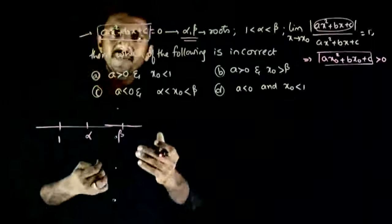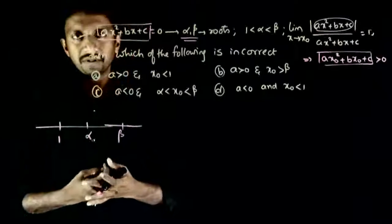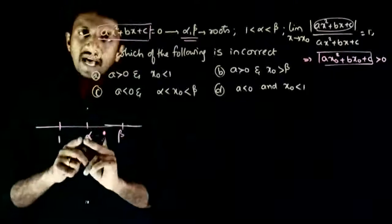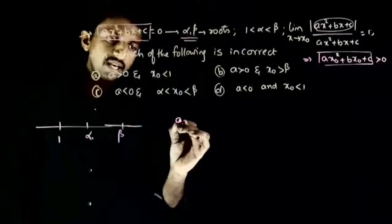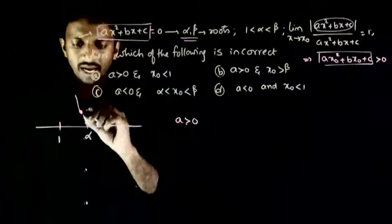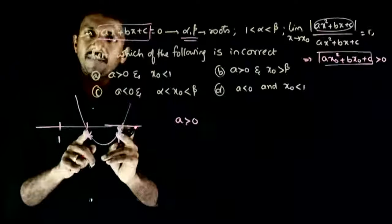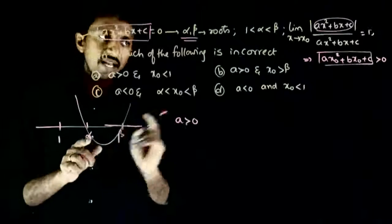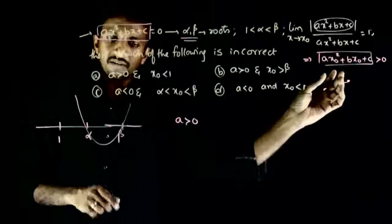So this has become a question of quadratic equations with roots alpha and beta. If a is greater than zero, the graph will be like this. Between alpha and beta, the value of the function will be negative.